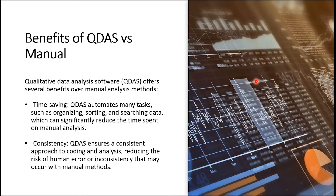One of the key benefits compared to manual coding is time saving. With Atlas TI it will be easy for you to organize, sort, and search within your transcripts and documents. This can assist you a lot in reducing the time spent on manual analysis. As postgraduate students, every minute counts, so this will save you a lot of time. It also promotes consistency — ensuring a consistent approach to coding and analysis while reducing the risk of human error.